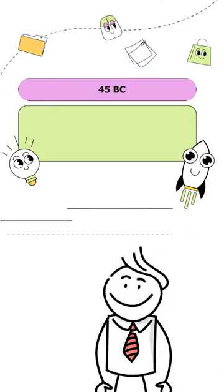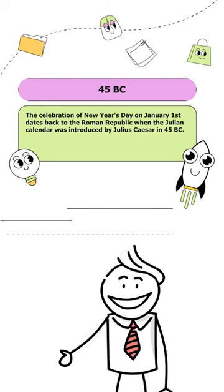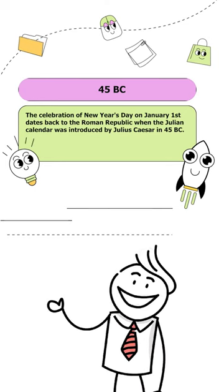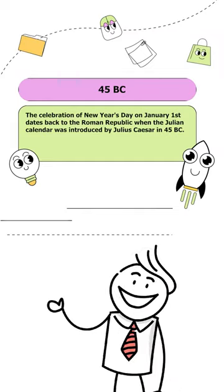45 B.C. The celebration of New Year's Day on January 1st dates back to the Roman Republic when the Julian calendar was introduced by Julius Caesar in 45 B.C. Last question.